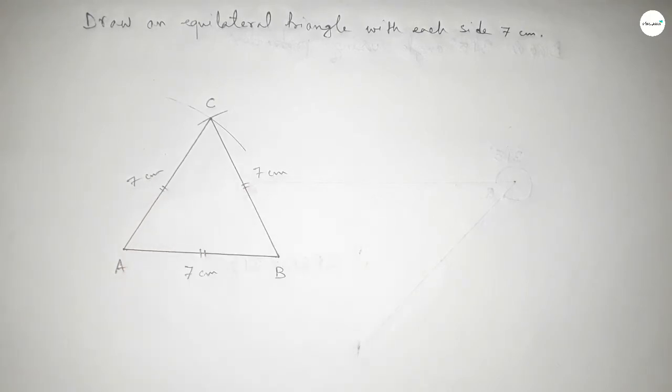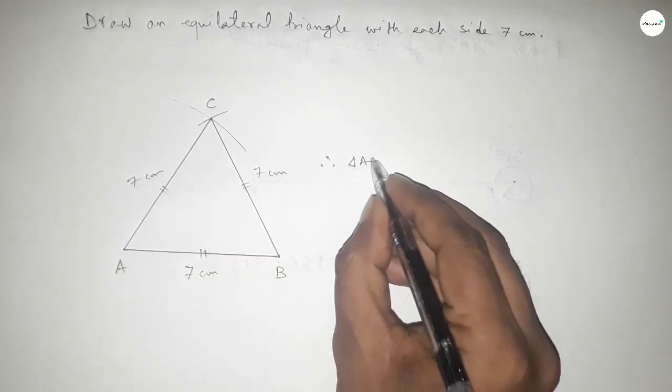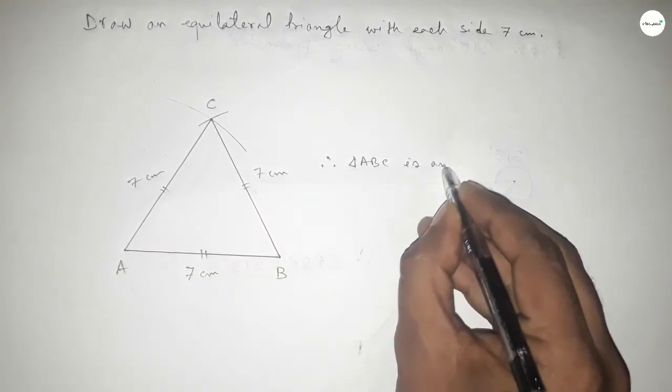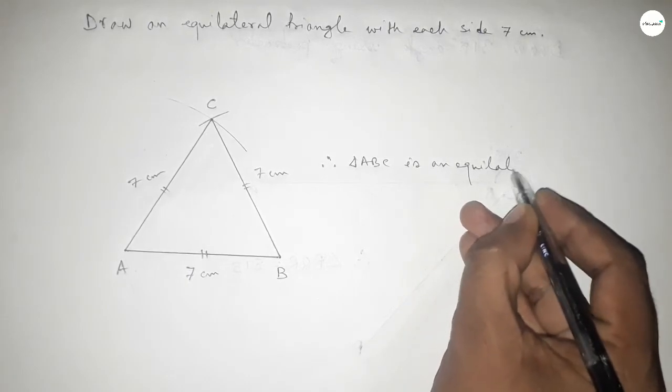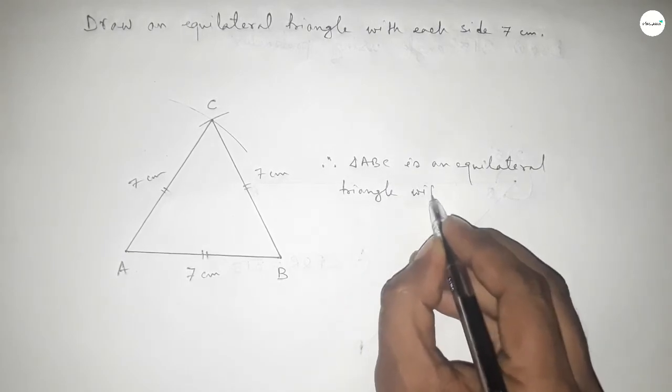Therefore triangle ABC is an equilateral triangle with each side 7 centimeters.